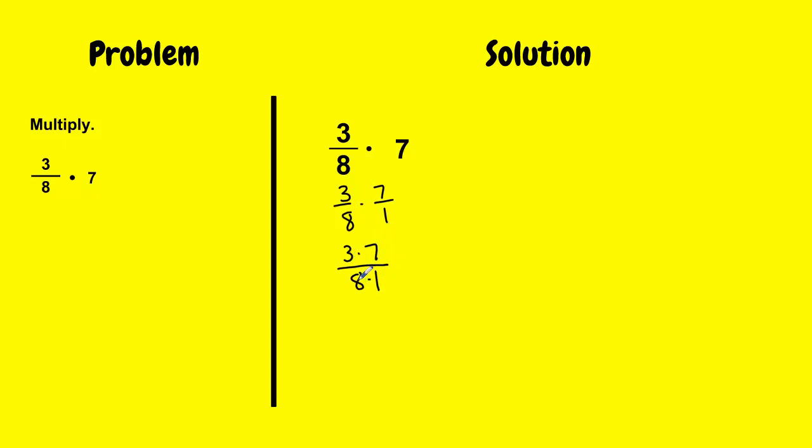So 3 over 8, I cannot simplify. 3 over 1, I cannot simplify. 7 over 8, I cannot simplify. And 7 over 1, I cannot simplify. So since everything is already simplified,